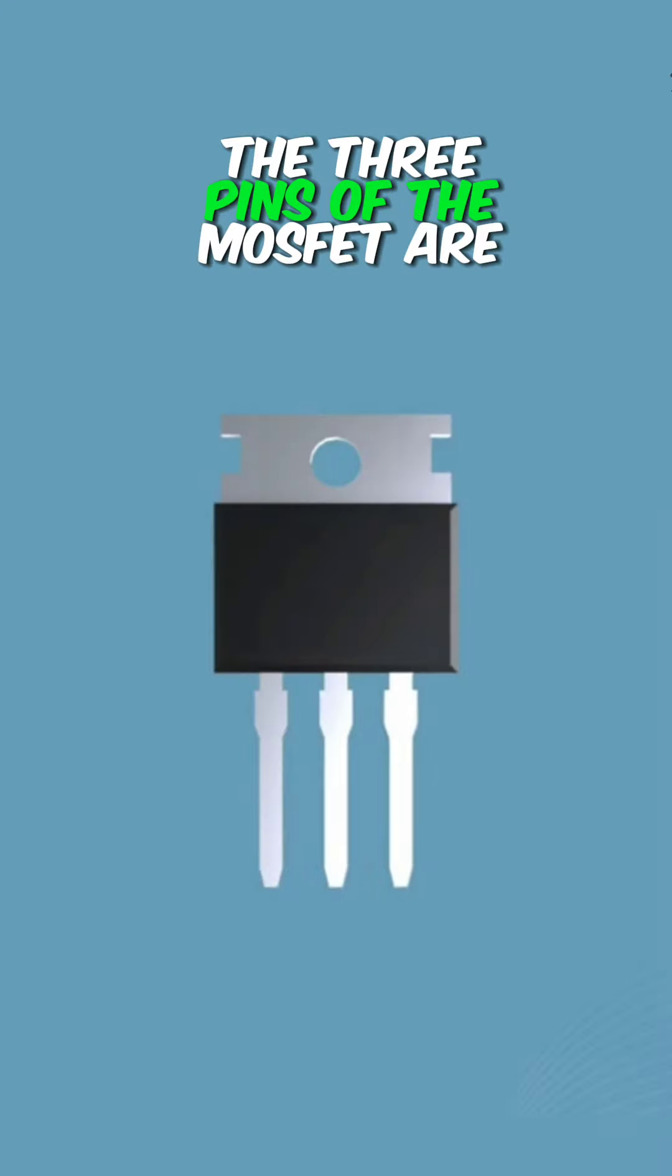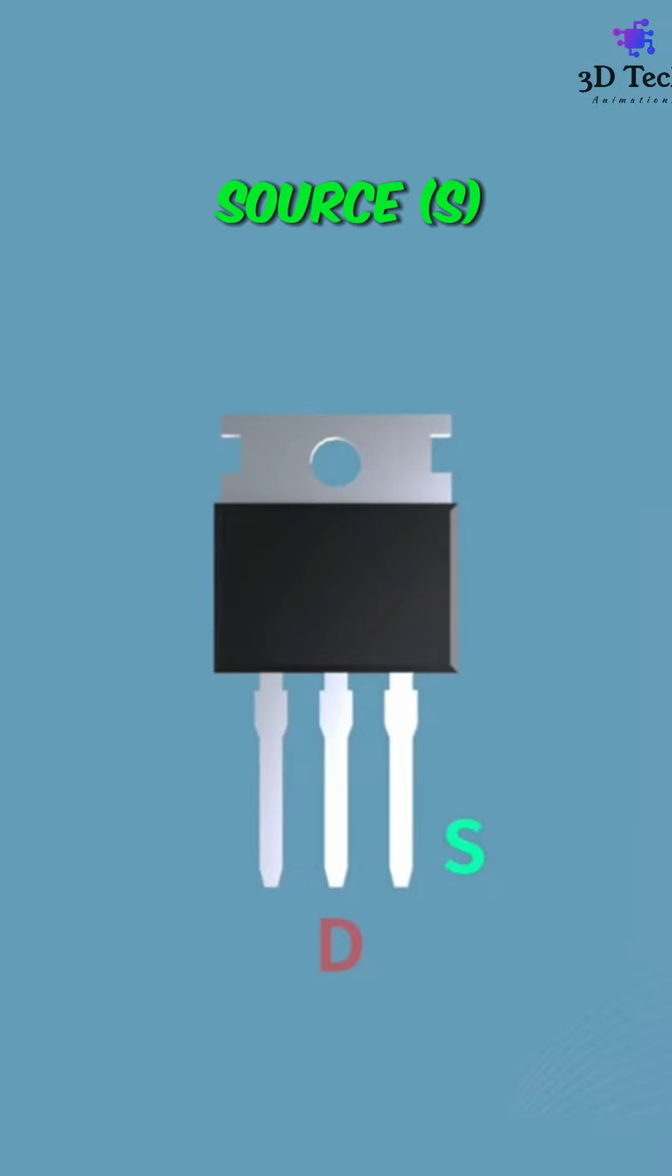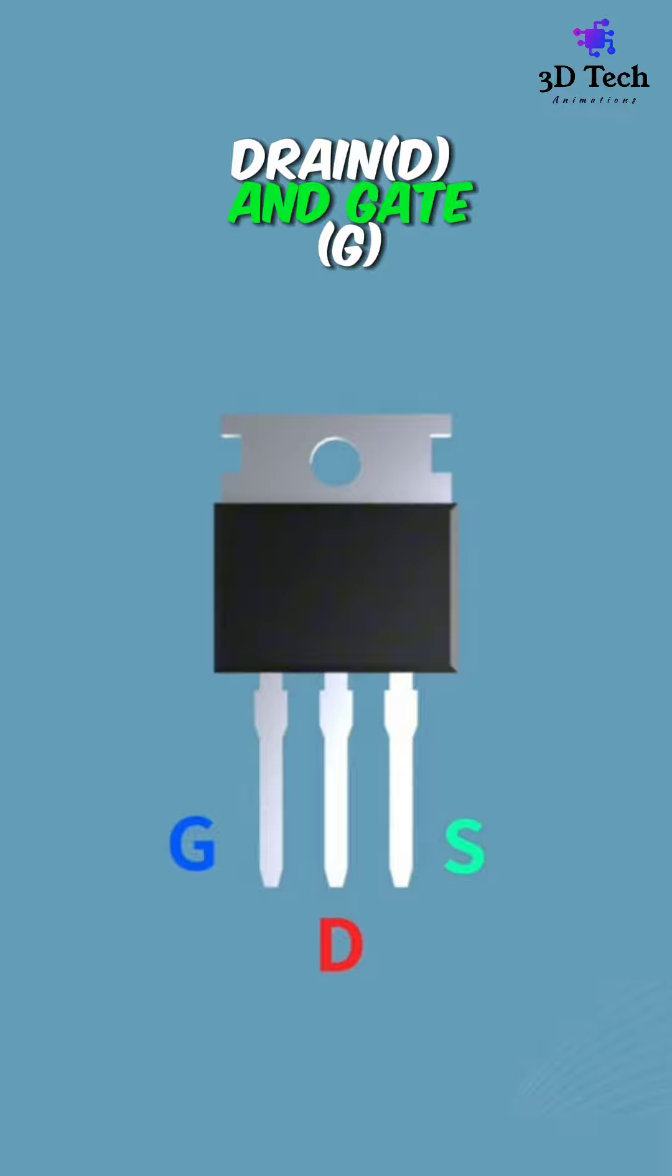Working of MOSFET. The three pins of the MOSFET are source S, drain D, and gate G.